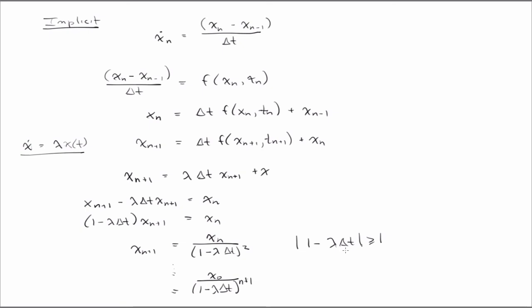So in implicit methods, we buy enhanced stability and the ability to take larger time steps for more computation per time step.